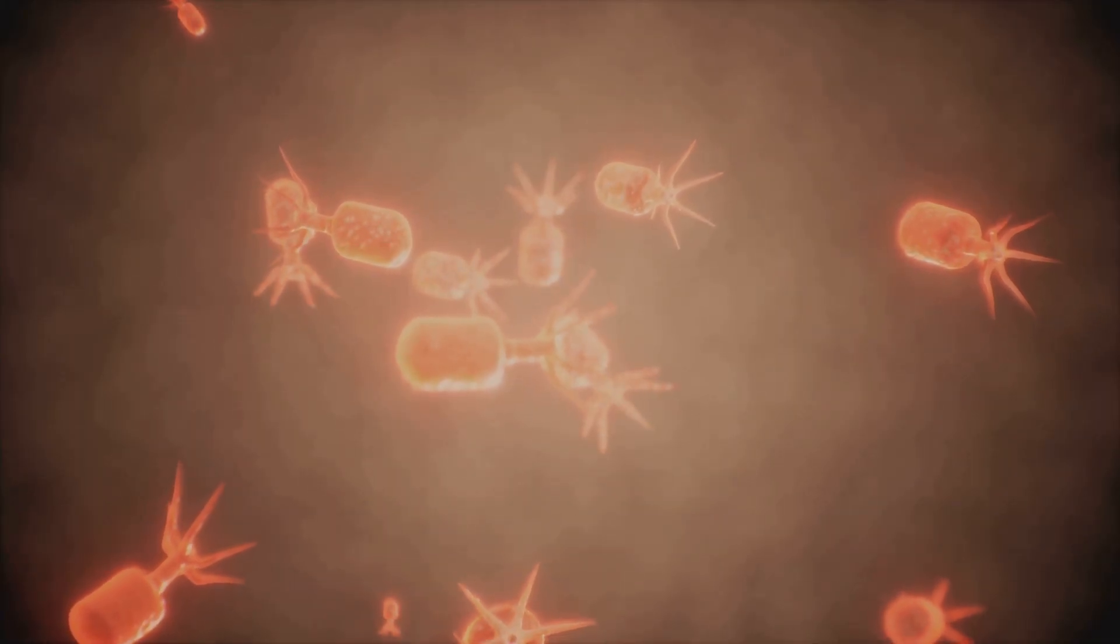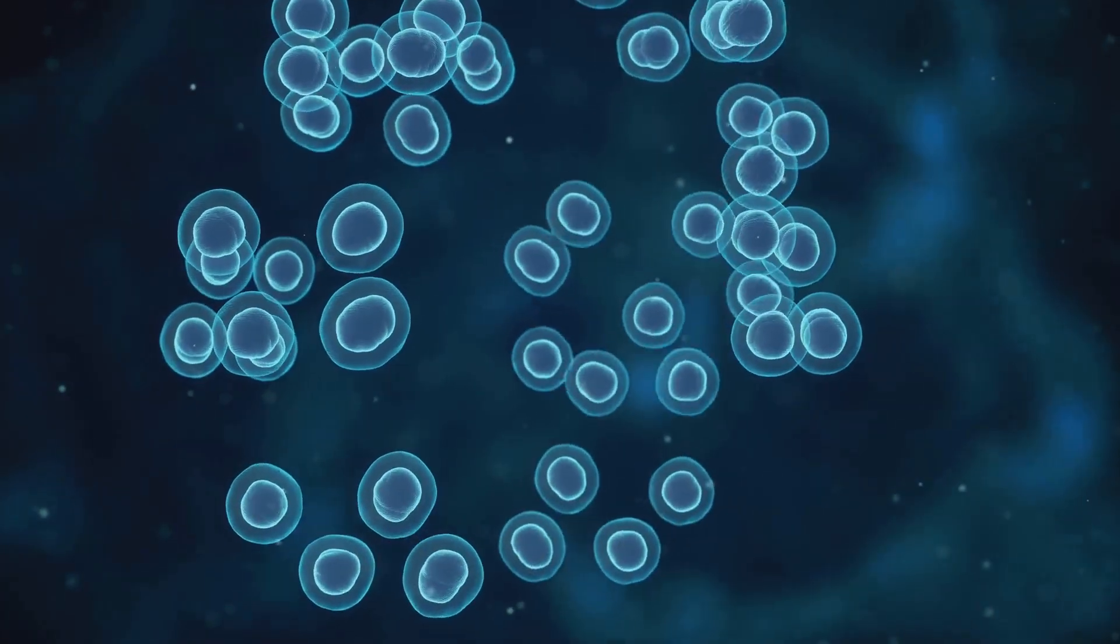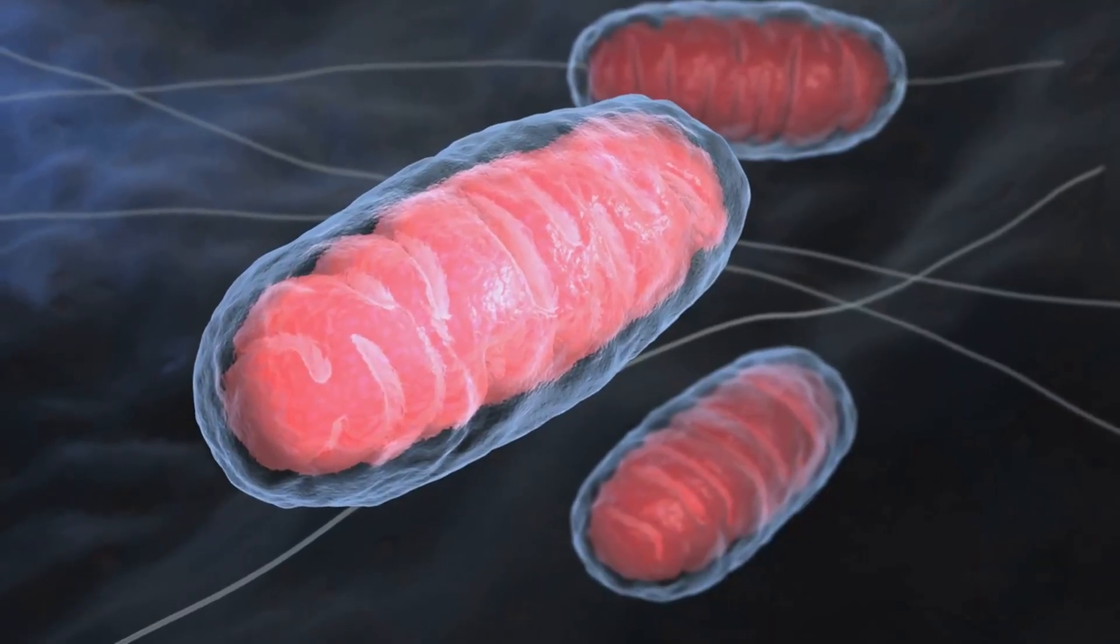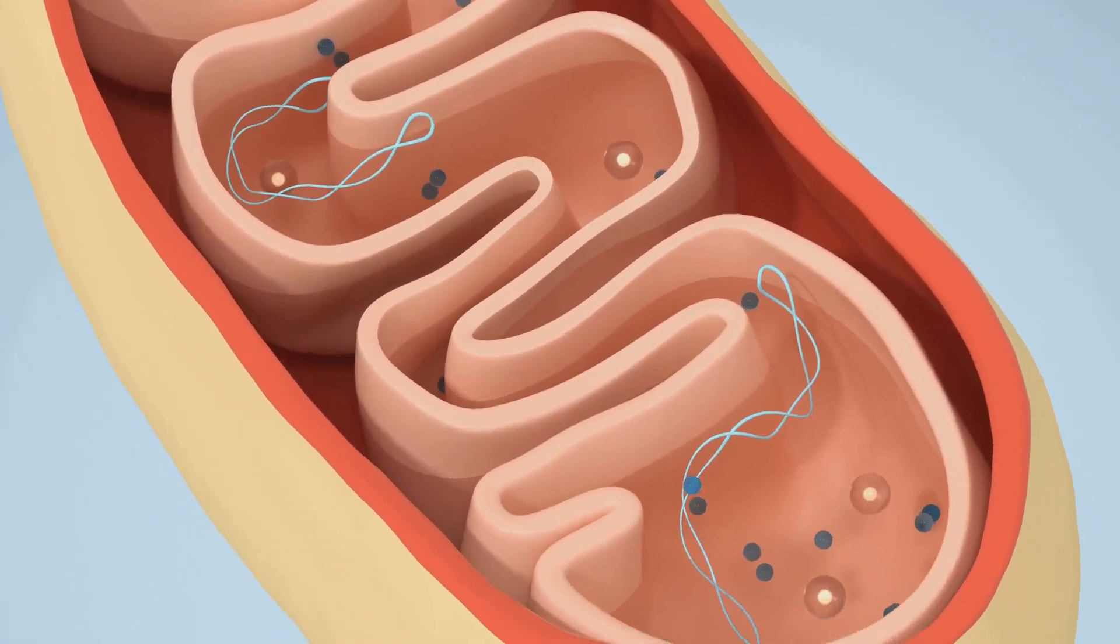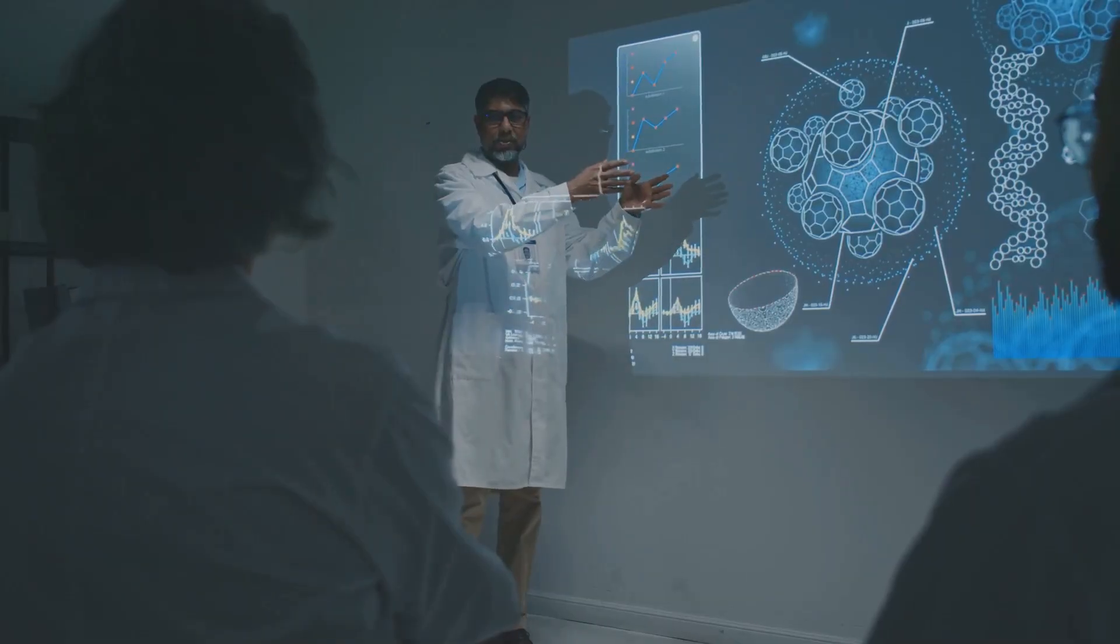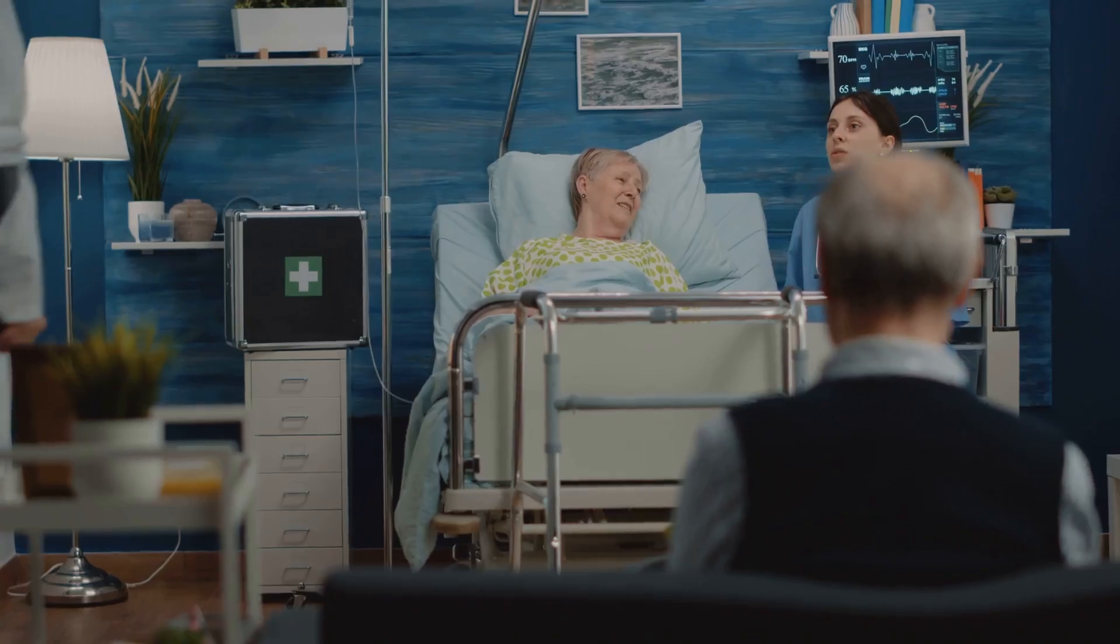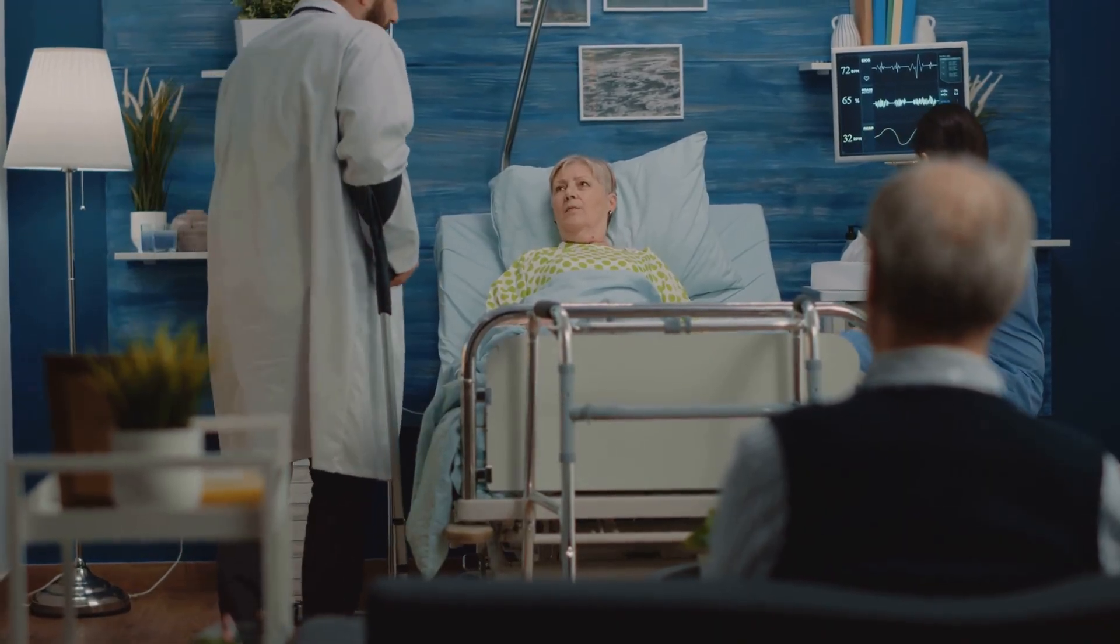Mitochondria are the energy producers of cells and, interestingly, they contain their own DNA, which we call mtDNA. Unlike nuclear DNA, mtDNA is inherited only from the mother. Mutations in mtDNA can cause serious diseases like Leigh syndrome or MELAS.